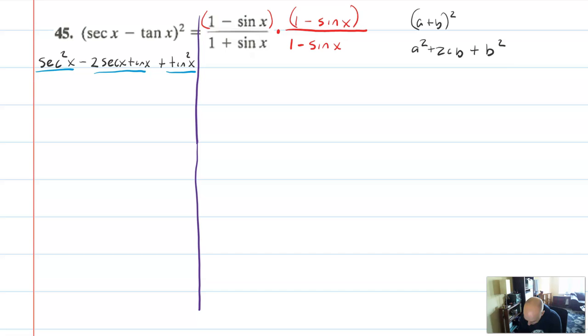This seems like it's going to make things more complicated, and it is going to make the top more complicated, but it's going to make the bottom simplify nicely. On the top, we're going to have to square it using the perfect square pattern. But on the bottom, we have a plus minus, so I'll be able to use a difference of squares pattern. In the numerator, it's going to be 1 minus 2 sine x plus sine squared x. And on the bottom, it's going to be 1 minus sine squared x.